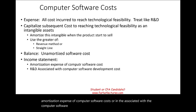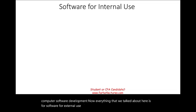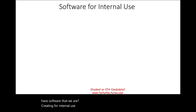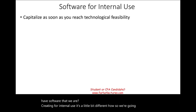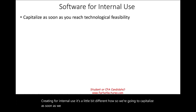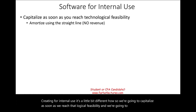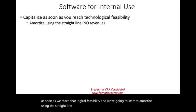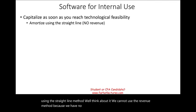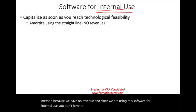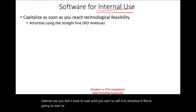Everything we talked about so far is for software for external use. What happens when we have software that we are creating for internal use? It's a little bit different. We're going to capitalize as soon as we reach technological feasibility and we're going to start to amortize using the straight-line method. We cannot use the revenue method because we have no revenue. And since we are using the software for internal use, we don't have to wait until we start selling it — we start to amortize as soon as we reach technological feasibility.